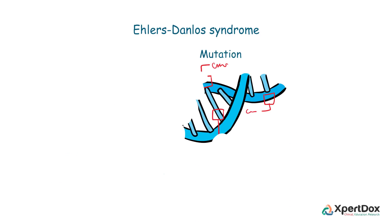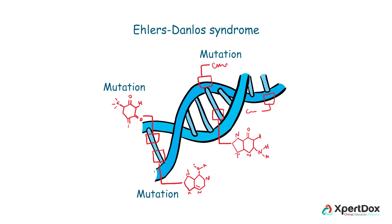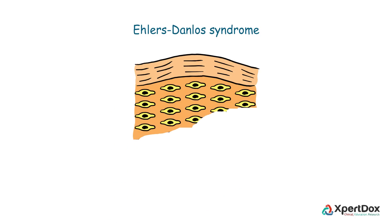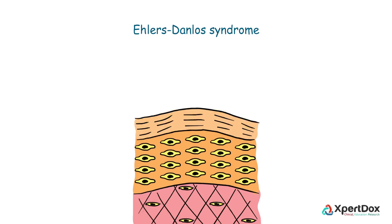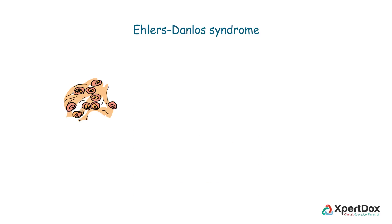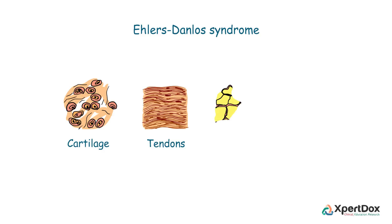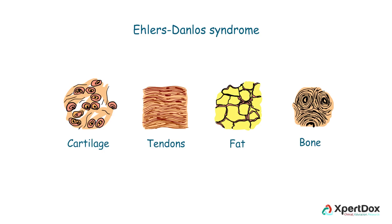Ehlers-Danlos Syndrome is caused by a mutation in one of more than a dozen different genes. The affected gene determines a specific type of the syndrome. Some forms relate to problems with collagen production and composition, though the particular issue varies. The body's many connective tissues, including cartilage, tendons, fat, and bones, may falter and fail when collagen and its enzymes are disrupted.